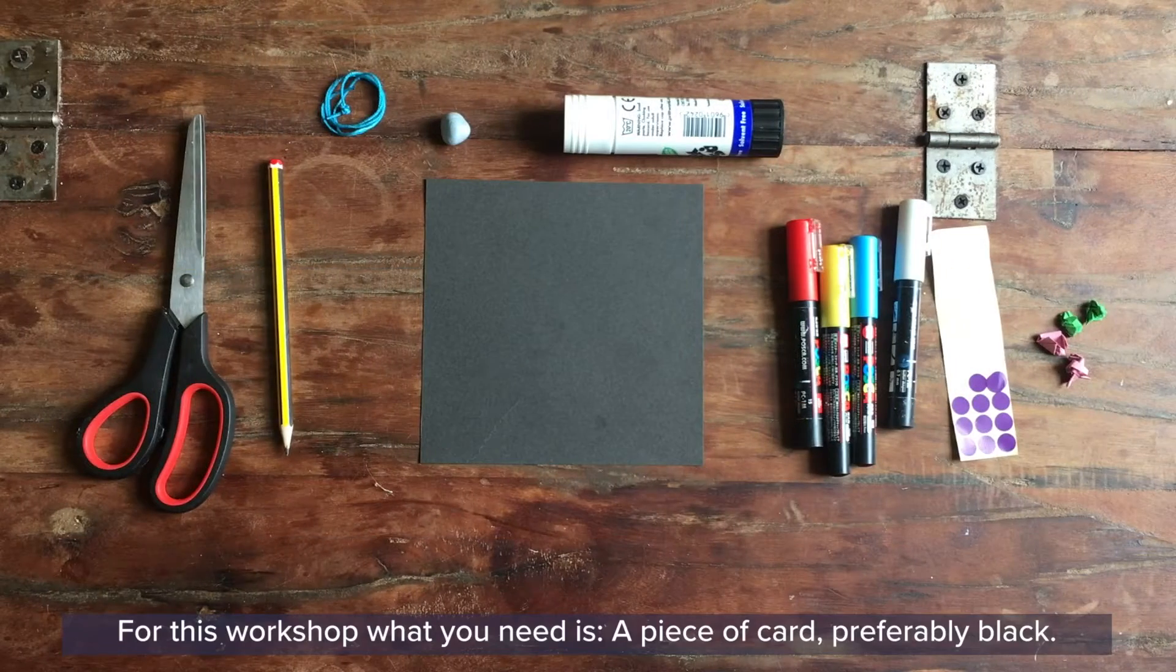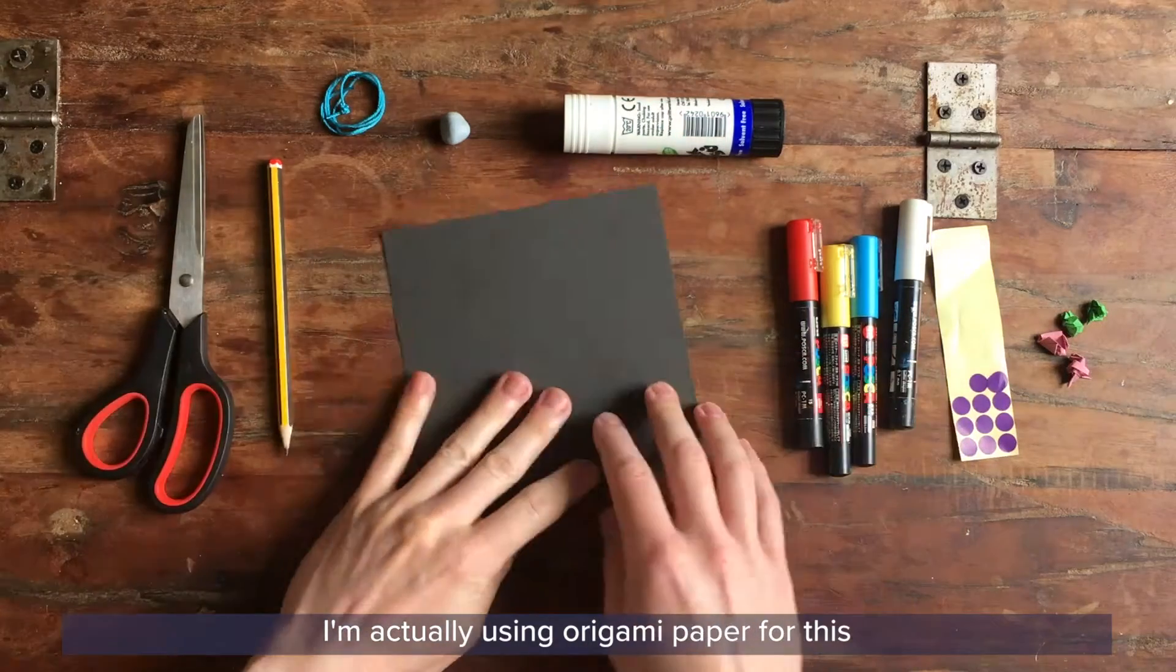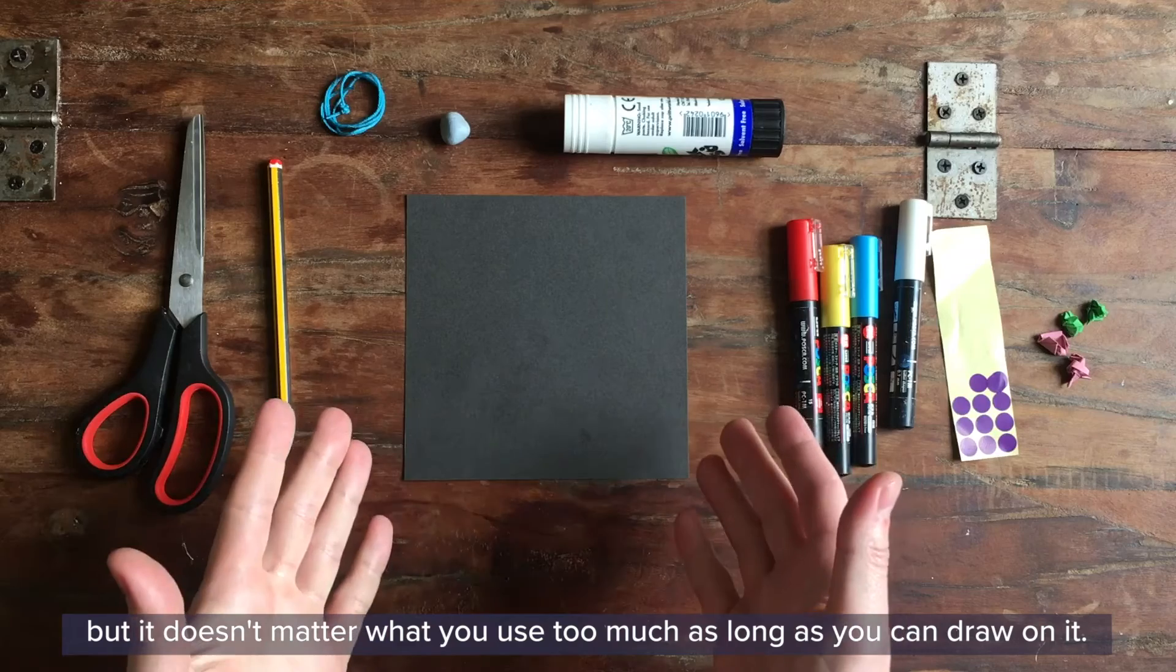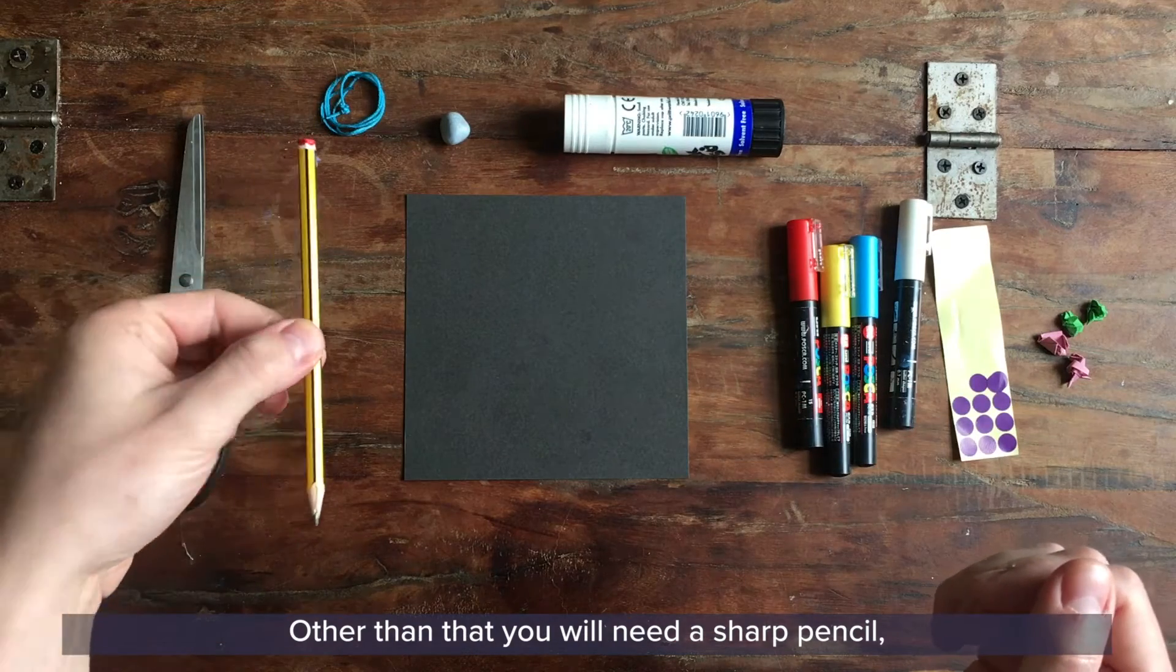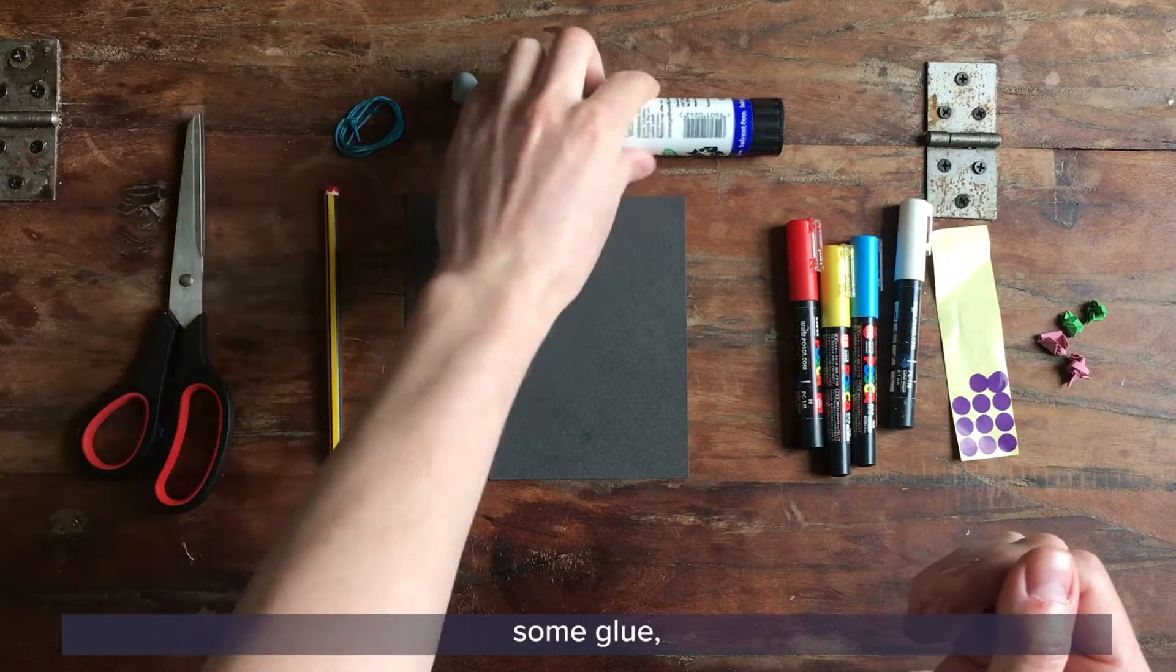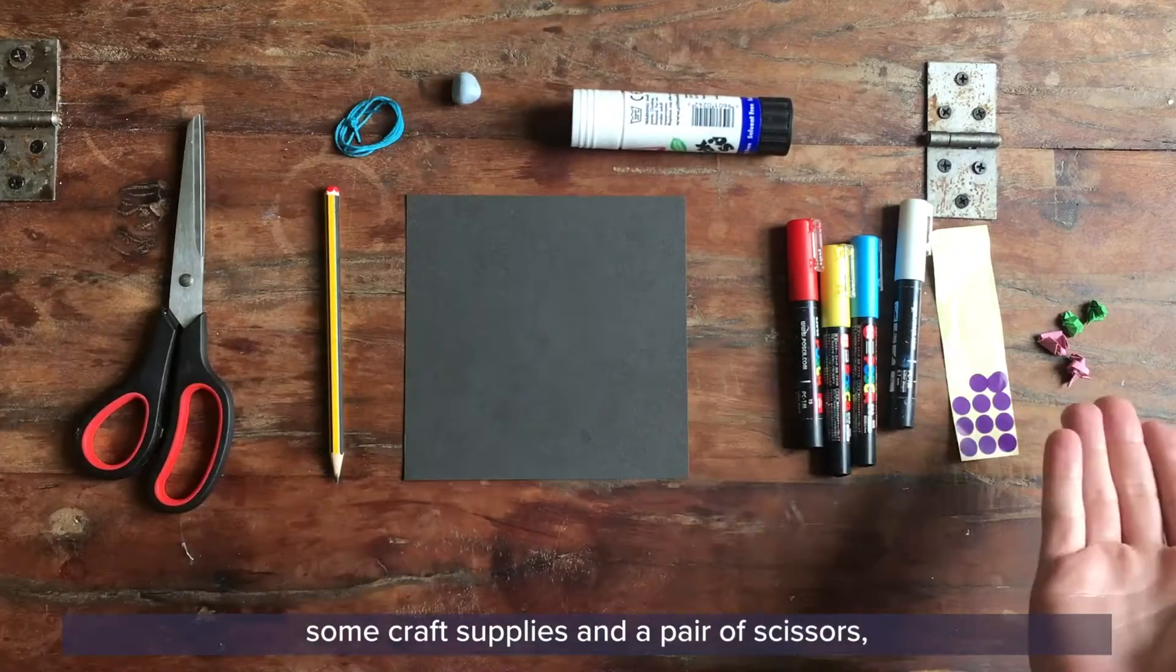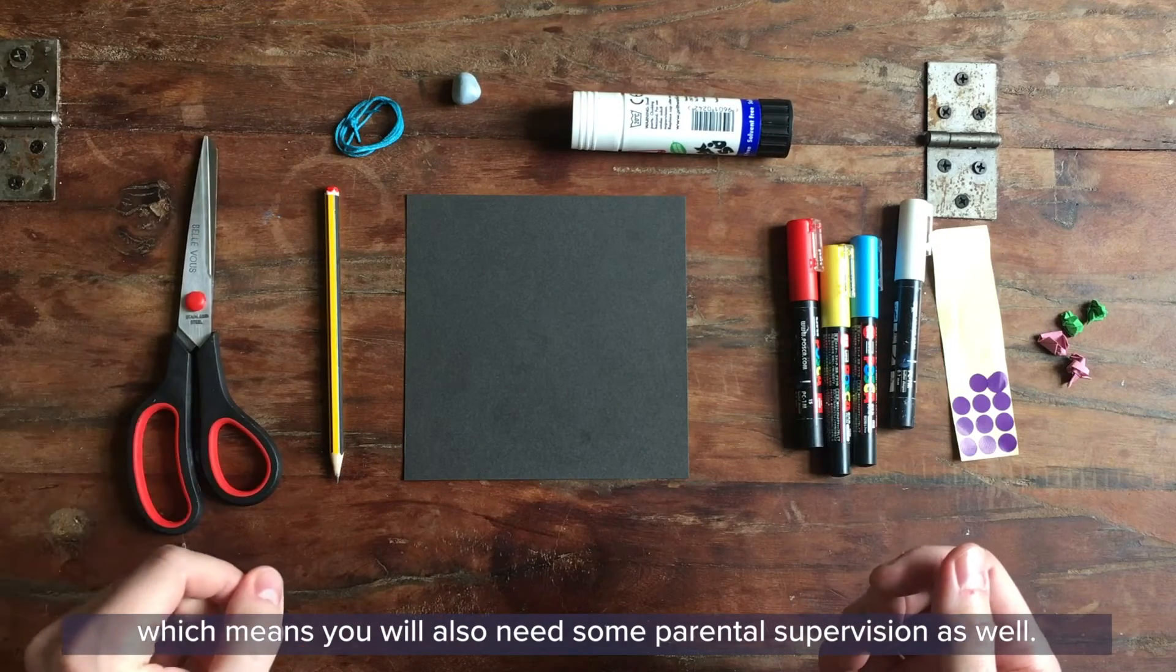For this workshop what you'll need is a piece of card, preferably black. I'm actually using origami paper for this but it doesn't matter what you use too much as long as you can draw on it. Other than that you will need a sharp pencil, you will need some blue tack, you'll need some thread, some glue, some craft supplies and a pair of scissors which means you will also need some parental supervision as well.